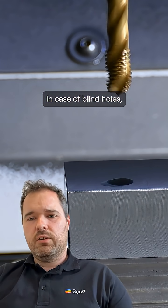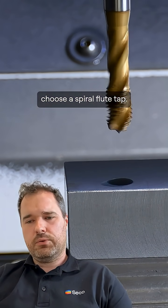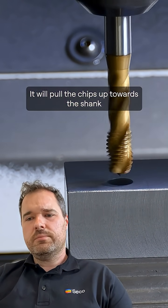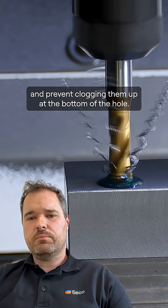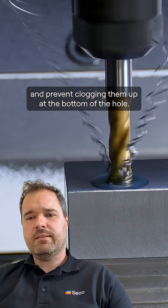In case of blind holes, choose a spiral flute tap. It will pull the chips up towards the shank and prevent clogging them up at the bottom of the hole.